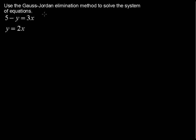Use the Gauss-Jordan Elimination Method to solve the system of equations: 5 minus y equals 3x and y equals 2x. If you're thinking that the substitution method would work well to solve this system of equations, I would agree with you. But here we are asked specifically to use the Gauss-Jordan Elimination Method. That's just another chance for us to learn another method to solve a system of equations. So let's do that.